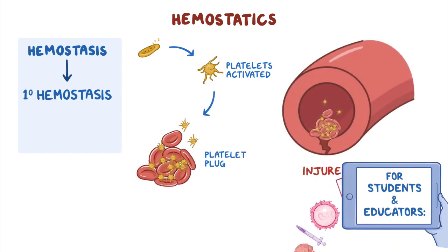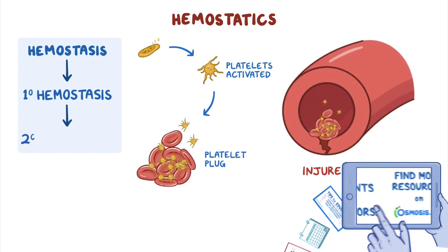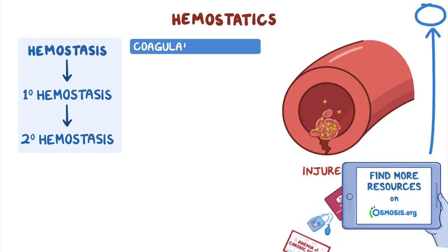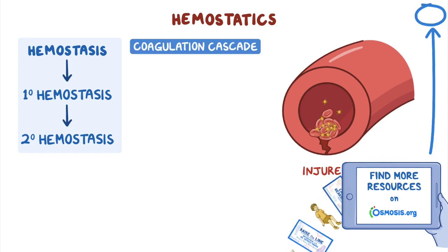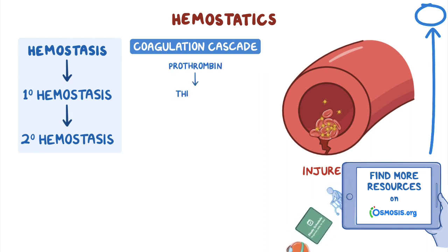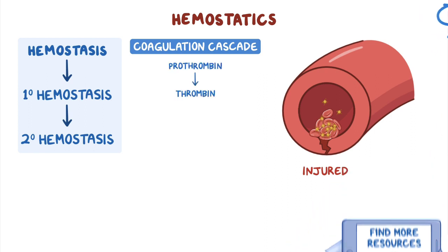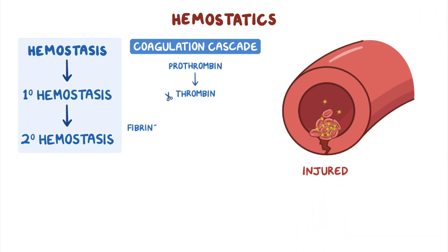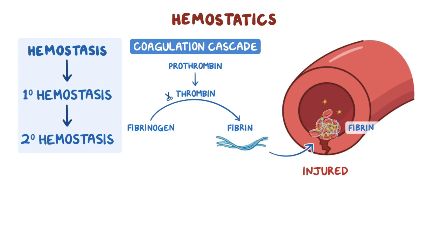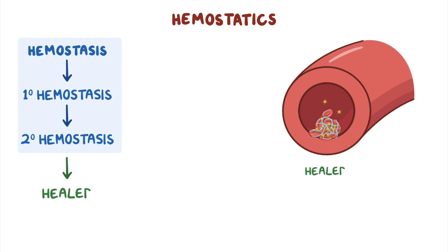Next, secondary hemostasis starts with a coagulation cascade when clotting factors become consecutively activated to ultimately activate prothrombin into thrombin. The activated thrombin then cleaves fibrinogen into fibrin, which binds with other fibrin proteins to form a fibrin mesh that reinforces the platelet plug.